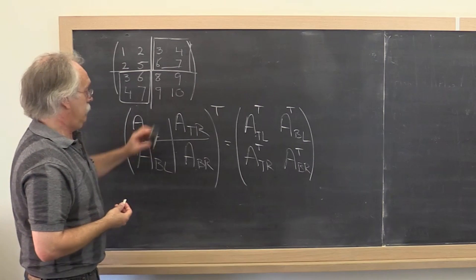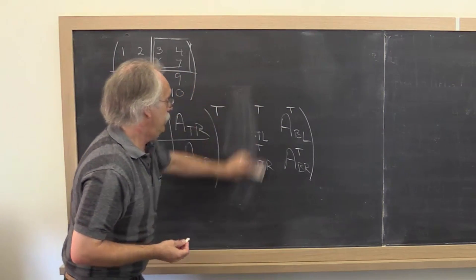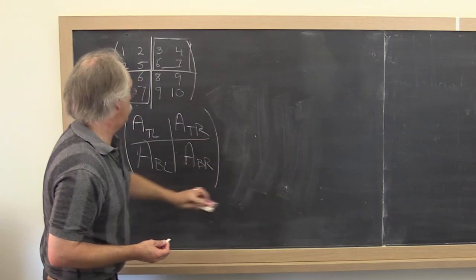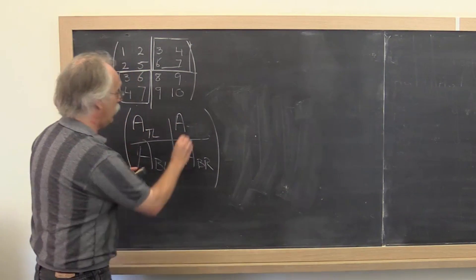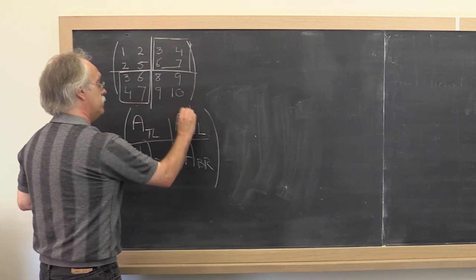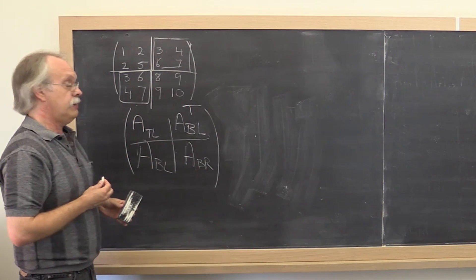What does that mean? If we now choose not to store this, then we can recover what's there by saying, oh, that's just a bottom left transpose.